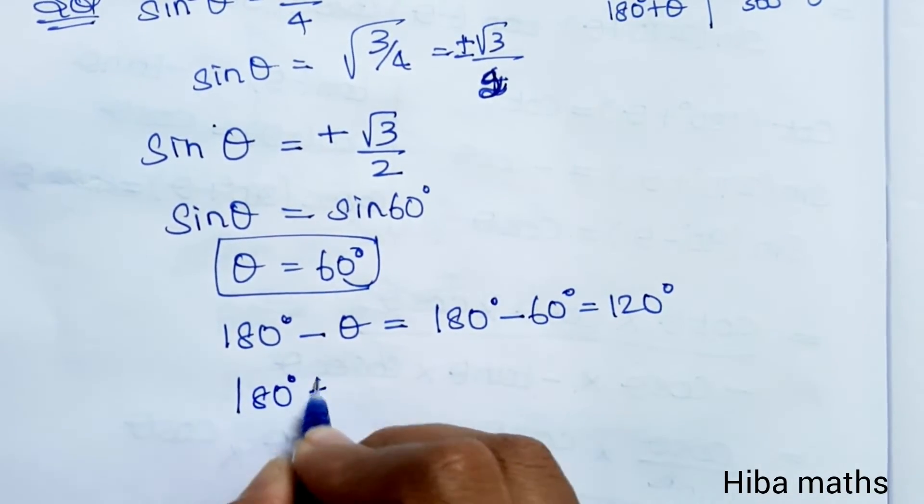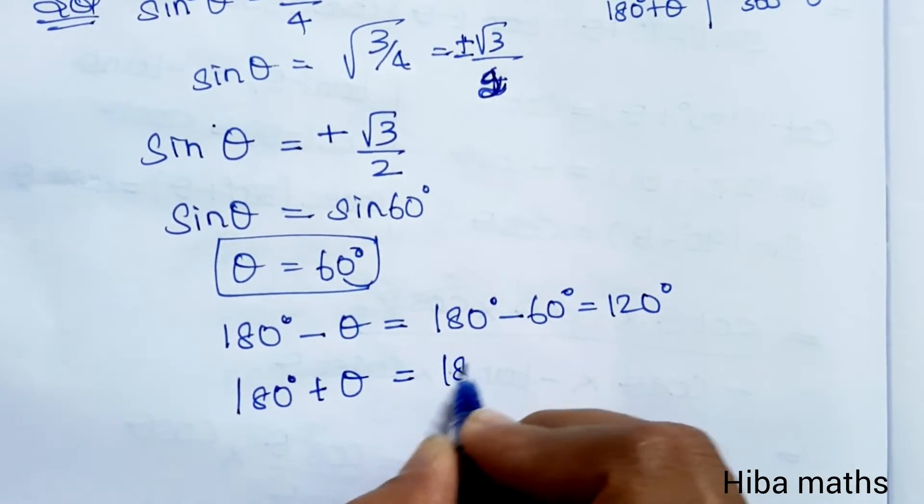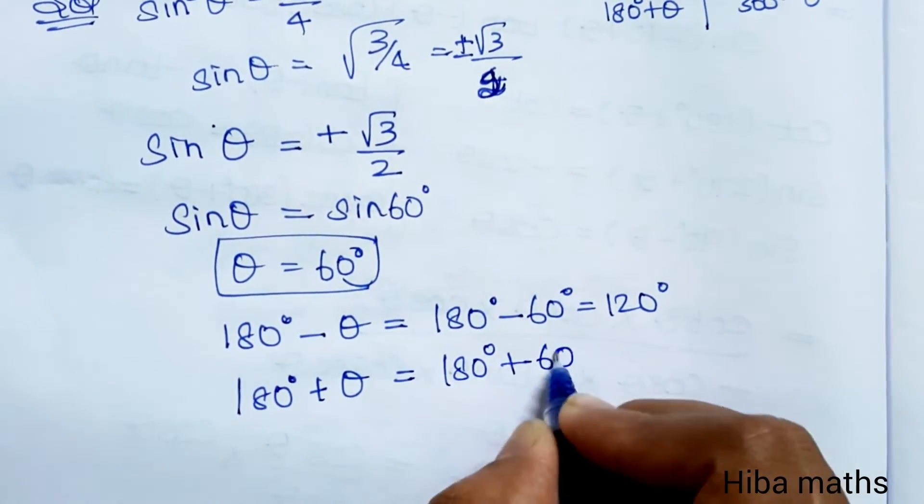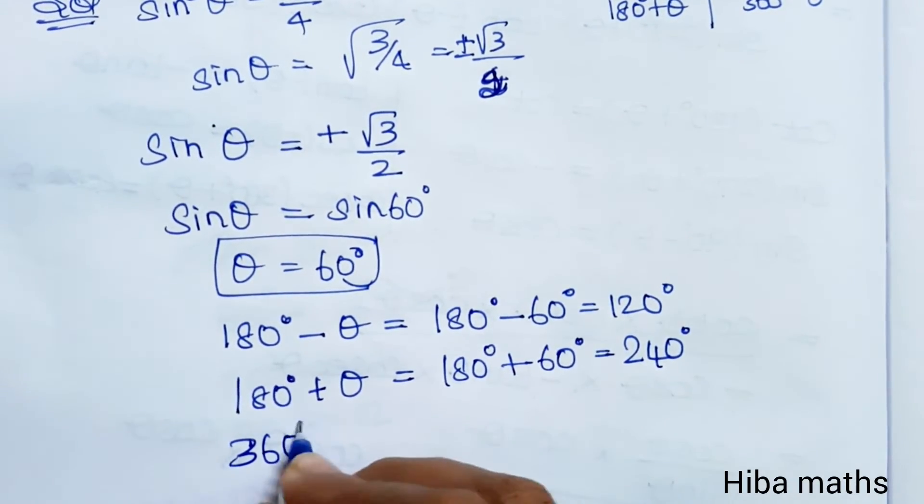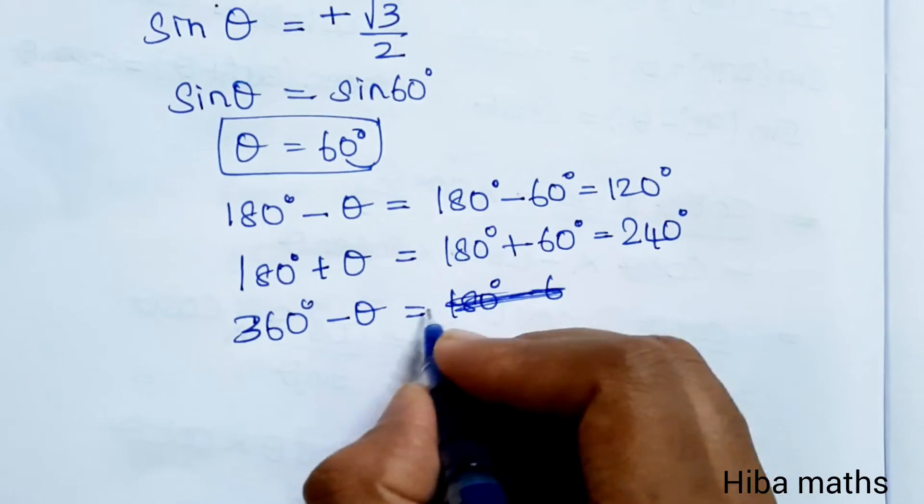180 degree plus theta is 180 degree plus 60 degree which is 240 degree. And 360 minus theta equals 360 degree minus 60 degree which is 300 degree.